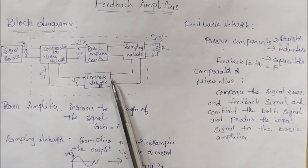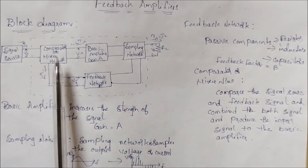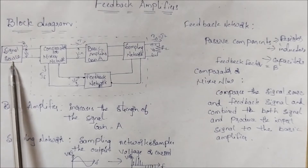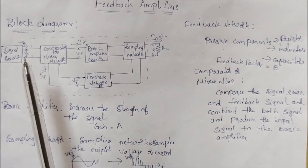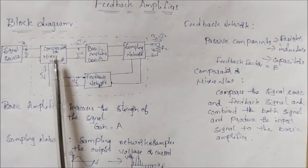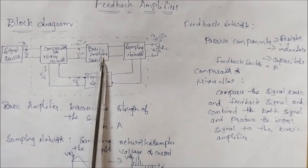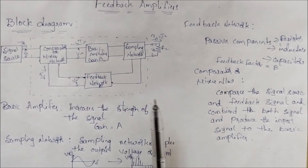The feedback network takes the sampling network output samples and produces a fraction of the signal. The next block is the comparator or mixer network. The input signal source and the feedback signal generated by the feedback network are combined here to produce the net input signal, which is then amplified. This completes the block diagram explanation.